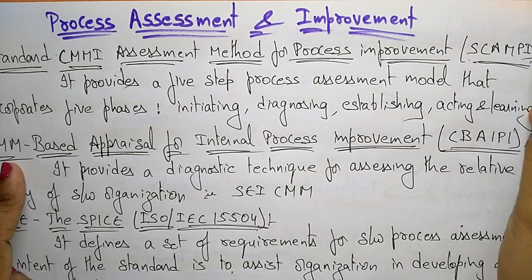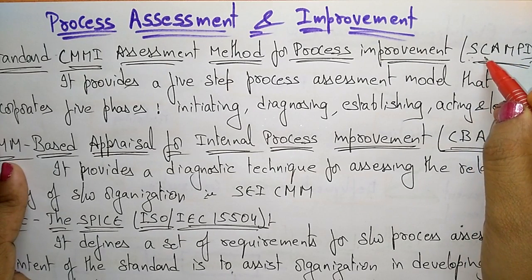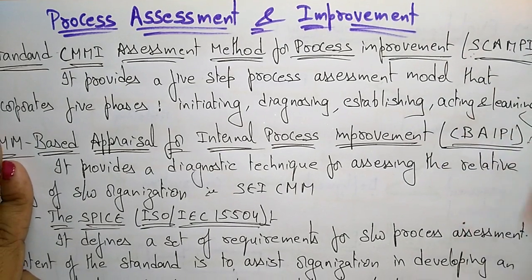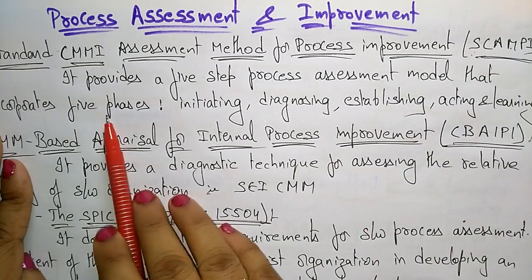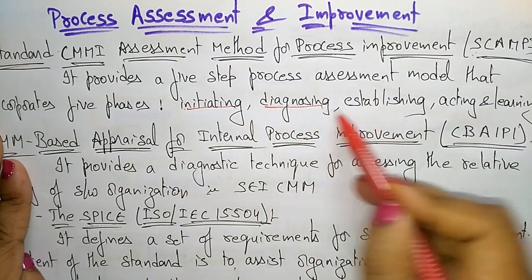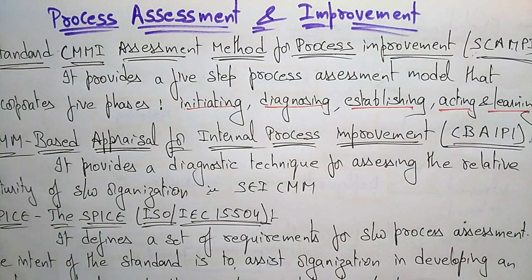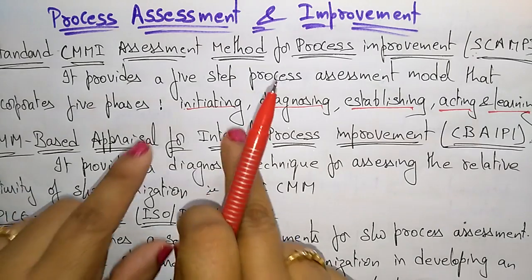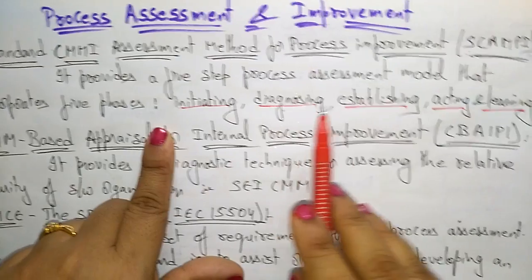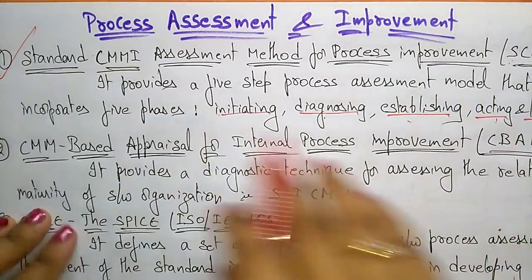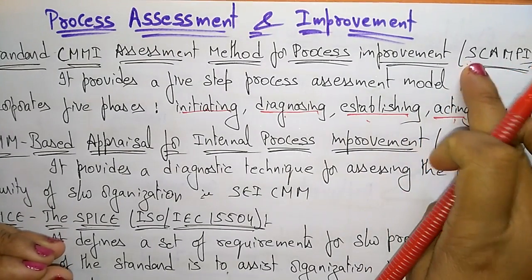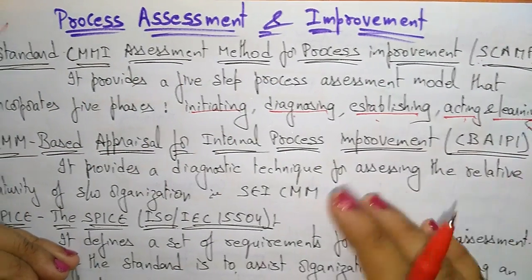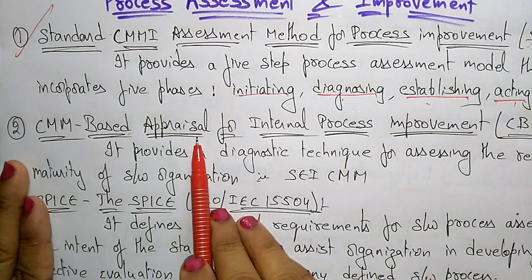SCAMPI stands for Standard CMMI Assessment Method for Process Improvement, where CMMI means Capability Maturity Model. It provides a five-step process assessment model that incorporates five phases: Initiating, Diagnosing, Establishing, Acting, and Learning. If an organization's process has these five phases, then that process will be given the SCAMPI standard.